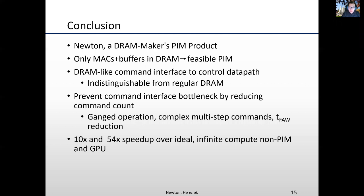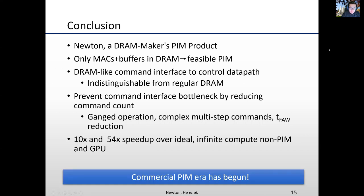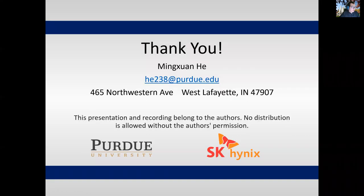To conclude, Newton is a commercially feasible PIM architecture. Taking advantage of the simple data path design and DRAM interface commands, Newton can be built with reasonable area and power overhead. The optimization of DRAM commands removes the bottleneck of the command interface, and the interleaving matrix layout reuses the input vector. The optimized Newton achieves 10× performance over any processing near-memory architecture and 54× speedup over a GPU. The commercial PIM era has begun. Thank you for joining today's presentation — if you have any questions, please let me know.